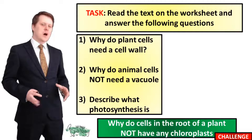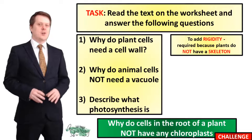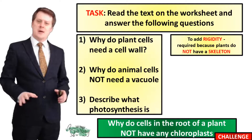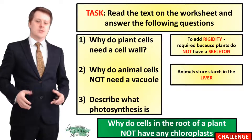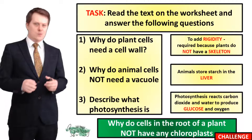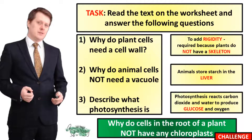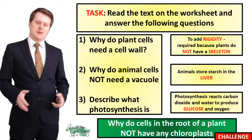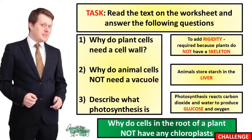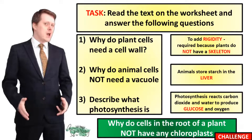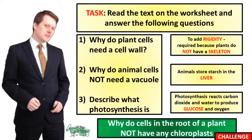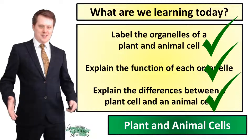Have you got your answers? Why do plant cells need a cell wall? This is to add rigidity and it's required because plant cells do not have a skeleton. Why do animal cells not need a vacuole? This is because animals store starch in the liver. And if we were to describe what photosynthesis is, it is the reaction between carbon dioxide and water to produce glucose and oxygen. As for why the cells in the root of the plant don't contain any chloroplasts — in order for photosynthesis to occur, chloroplasts have to absorb light energy. Because the cells in the root of the plant are underground, they don't receive any light, so it would be pointless for them to contain chloroplasts.